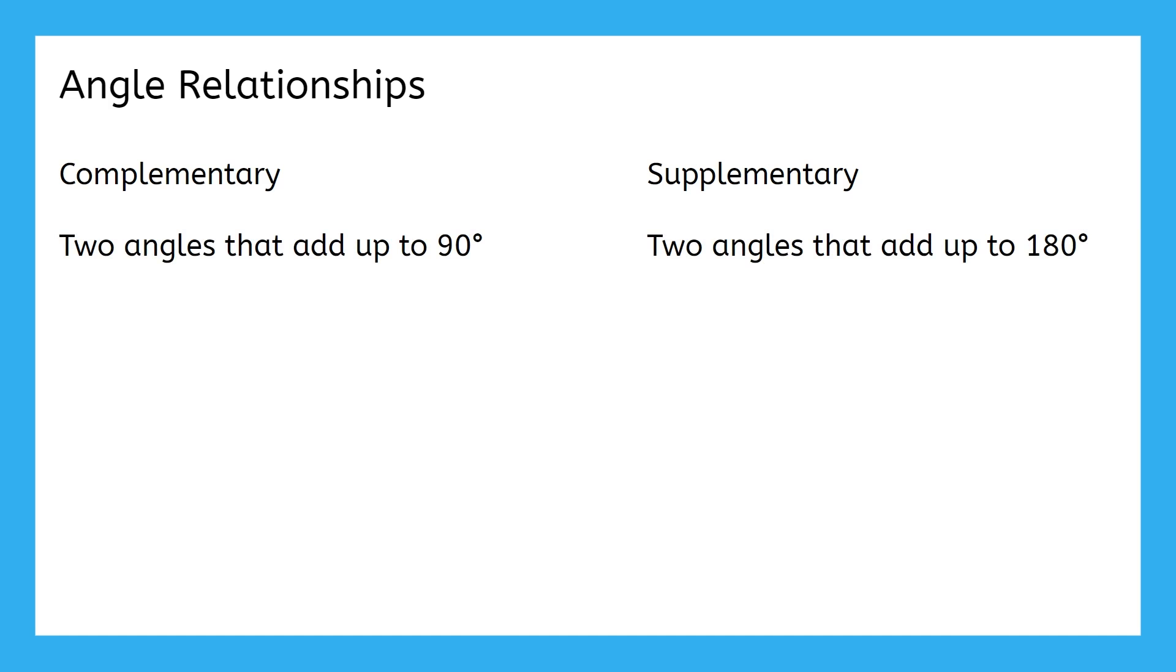Next, we'll talk about some ways that angles can relate to each other. The two terms we're starting with are COMPLEMENTARY and SUPPLEMENTARY. COMPLEMENTARY angles add up to 90 degrees, and SUPPLEMENTARY angles add up to 180 degrees. And remember, for both of these, you can only add two angles together. Add these definitions to your notes template, and try finding angles like these in the practice problem.